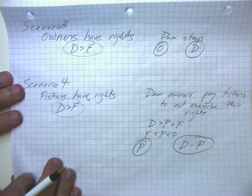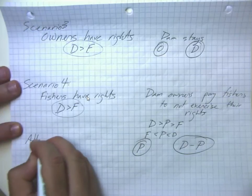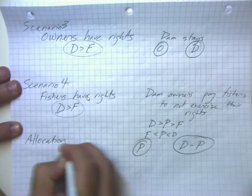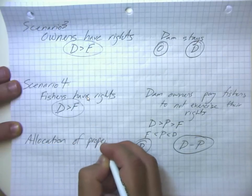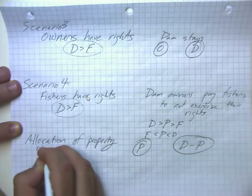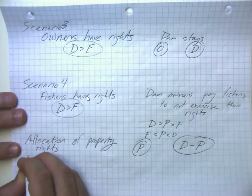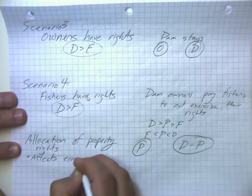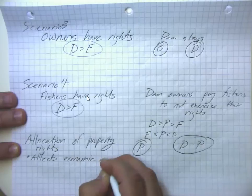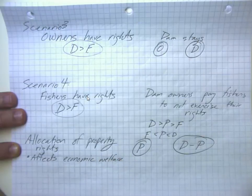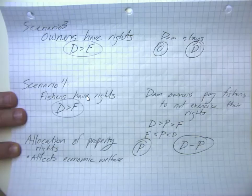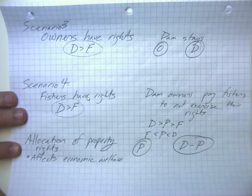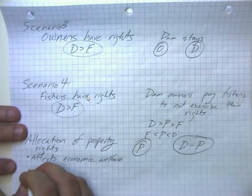So one result of the Coase Theorem is that the allocation of property rights or decision-making rights affects economic welfare because essentially if you have rights, either you don't have to pay to exercise them, or if it's more efficient that you not exercise them, you can at least get some compensation for giving up your rights.